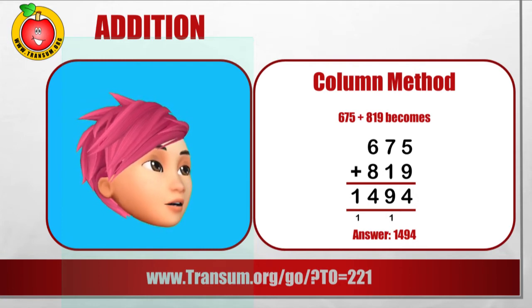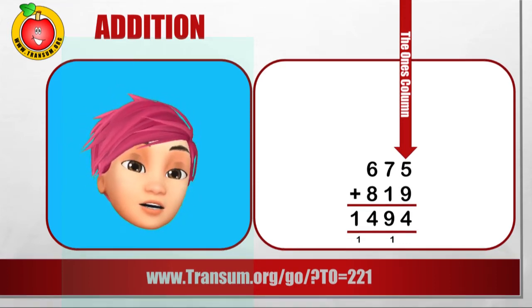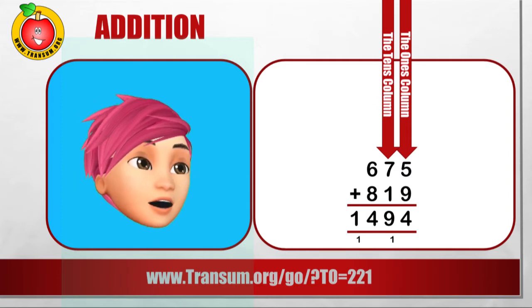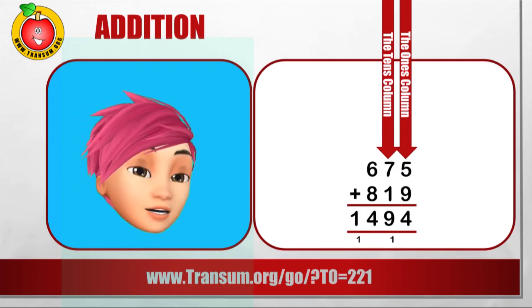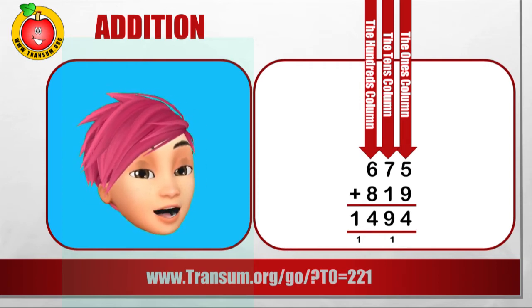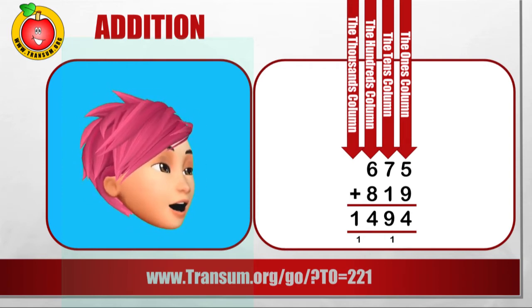It doesn't matter which of the numbers we put on the top or which on the bottom as long as we line up the columns to the right. That's the ones column on the right. All the digits represent ones. Next to that is the tens, and next to the tens column comes the hundreds, and you know it, the next column is the thousands.